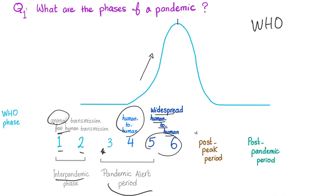After the peak, you have the post-peak period (PPP). After that, you have the post-pandemic period, also abbreviated PPP but referring to two different things. And after that, you reach the inter-pandemic phase again, getting ready for another pandemic.